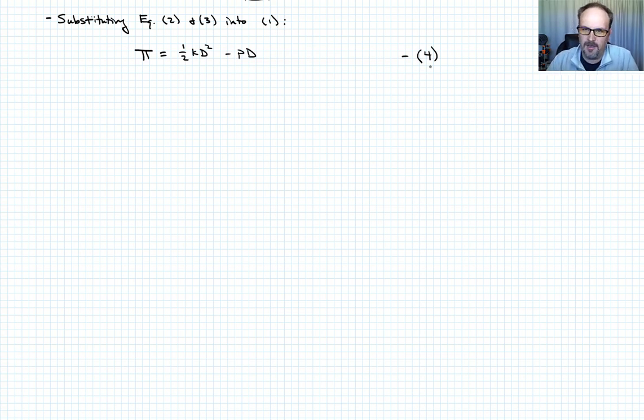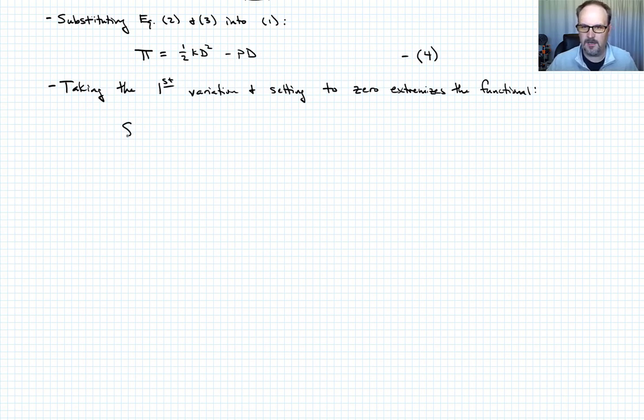So now, if we apply our principle of stationary total potential energy, we should be able to extremize this functional and recover the equations of equilibrium. So let's check that out. So let's take the first variation and set it equal to zero. So here we go. Delta pi is equal to zero. And what's that variation look like?